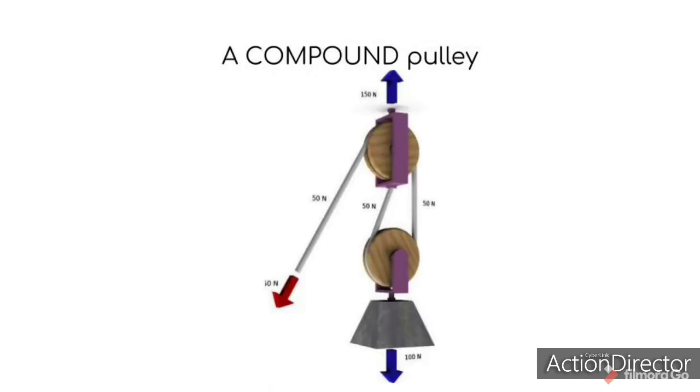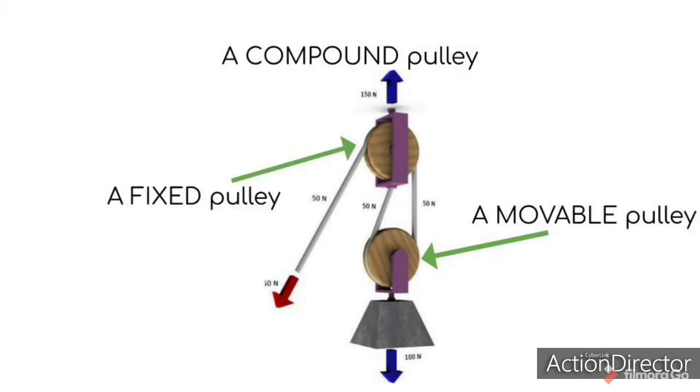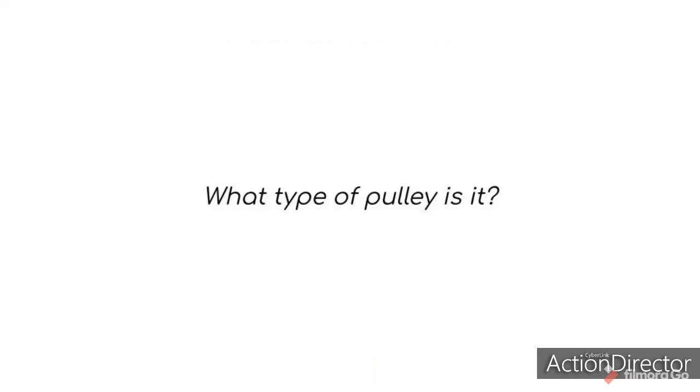In a compound pulley system, there is both a movable pulley as well as a fixed pulley. This means that not only does the load feel lighter, but you can also change the direction of the force. Although this type of configuration makes it possible to move heavy loads very easily, the trade-off is that considerably more motion is required to do the work.